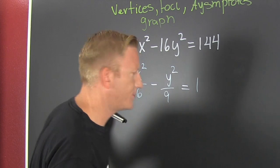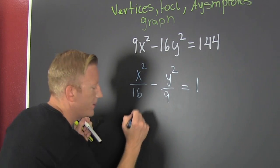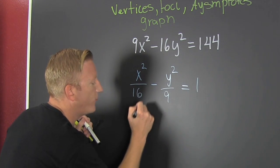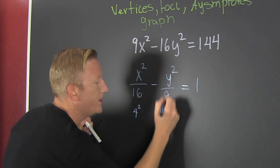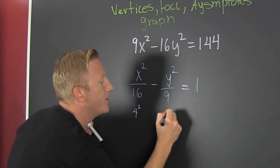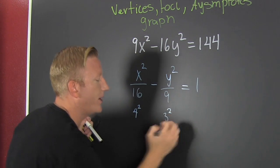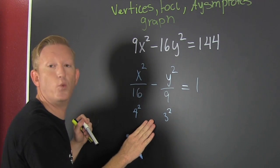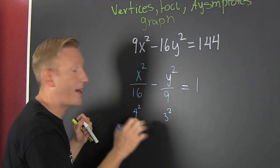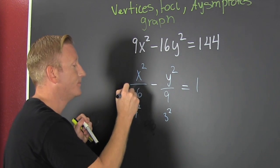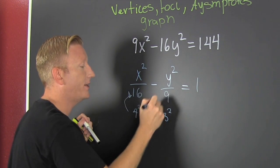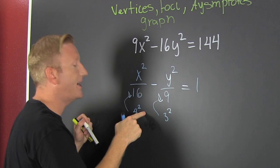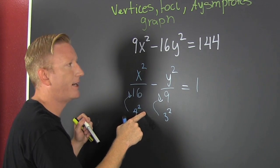What do we get out of this? We get our big and we get our small. That's 4 squared and that's 3 squared. So while we're here, why don't we graph that hyperbola?